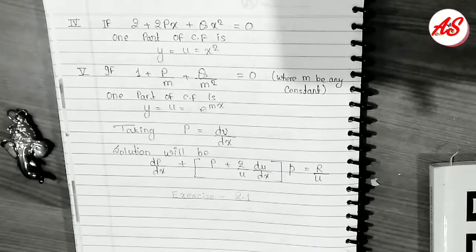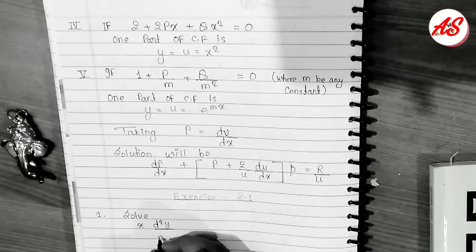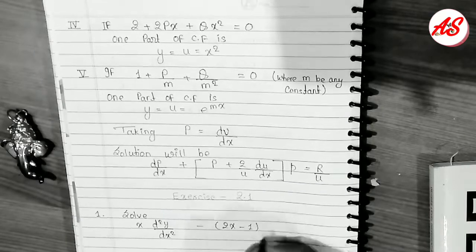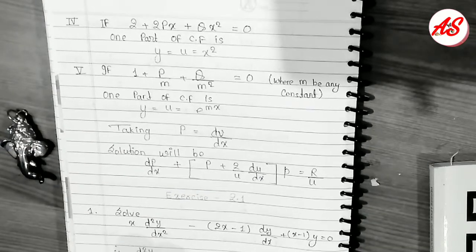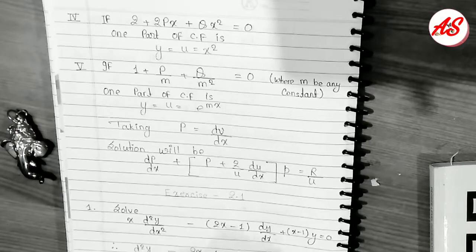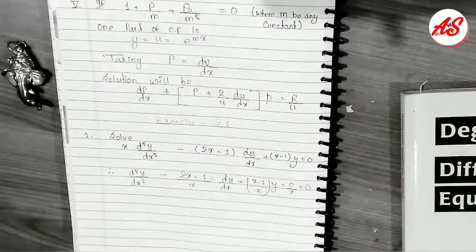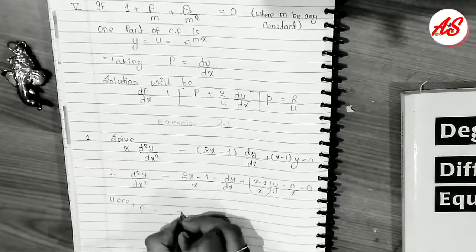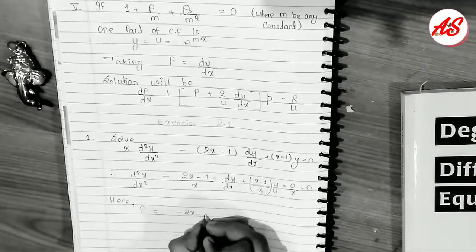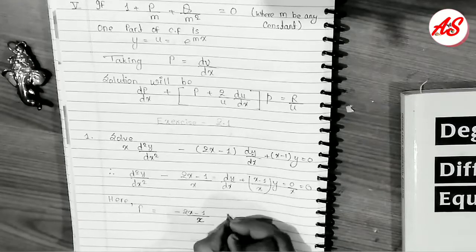Now we are doing Exercise 2.1, Question 1: x(d²y/dx²) − (2x − 1)(dy/dx) + (x − 1)·y = 0. To solve this, we first recognize the values of P, Q, and R from the equation.